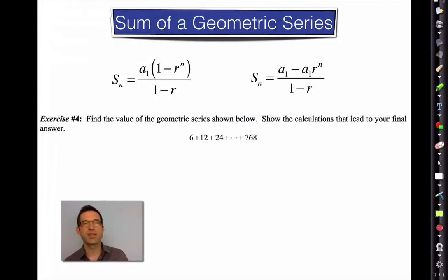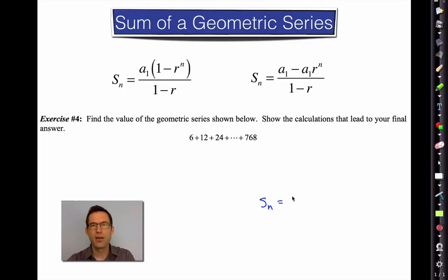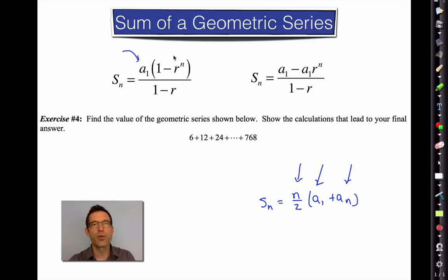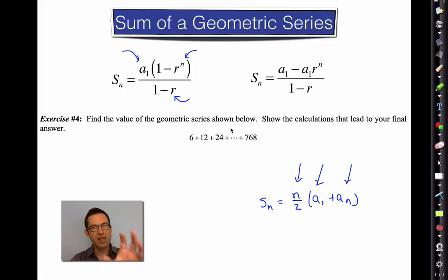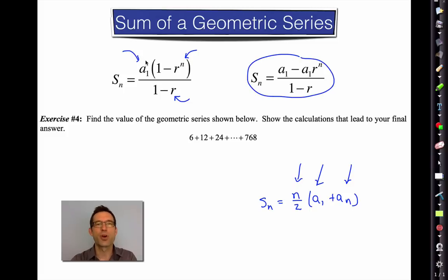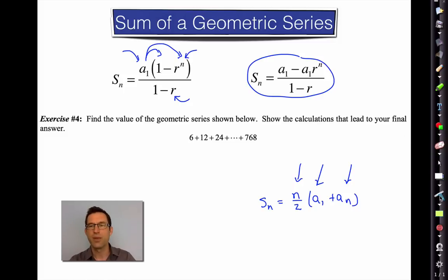Let's compare the two formulas. For an arithmetic series, we needed the first term, the last term, and the number of terms. For a geometric series, we need the first term and the number of terms, but we need the common ratio instead of the last term. Sometimes the formula is written with a₁ distributed in the numerator — either form works, though the factored form may be easier to calculate.